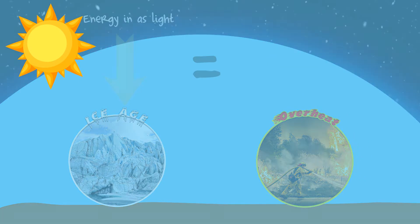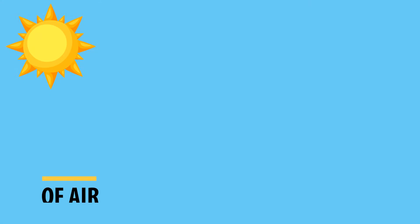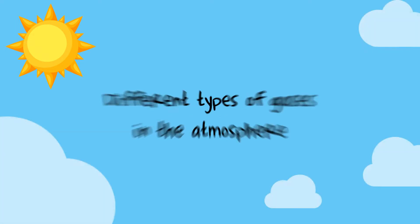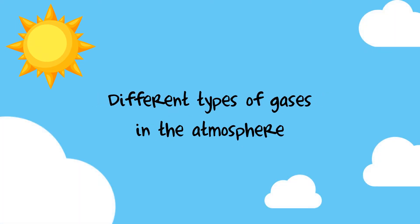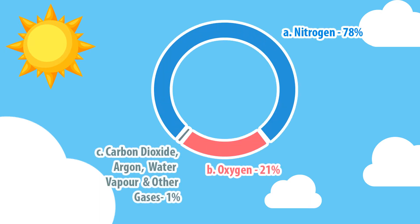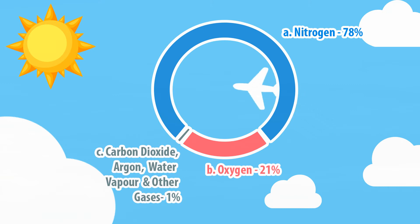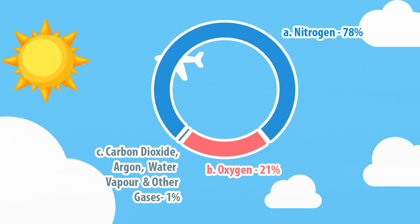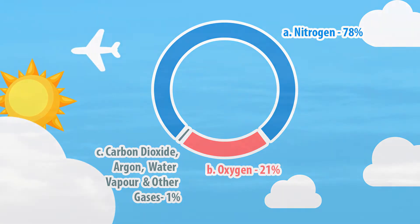Our next topic is the composition of air. There are different types of gases in the atmosphere, namely nitrogen, oxygen, argon, carbon dioxide, and other noble gases. The most abundant is nitrogen.